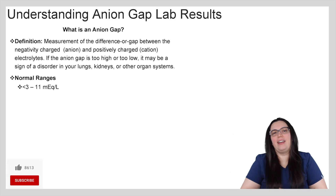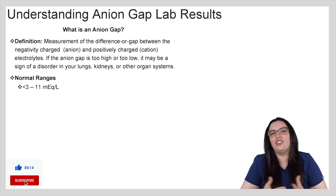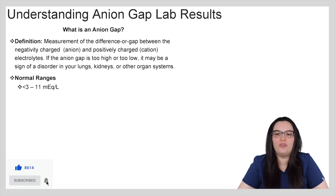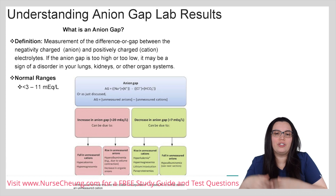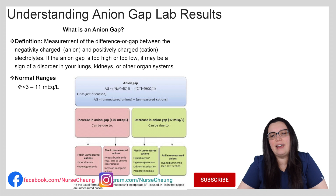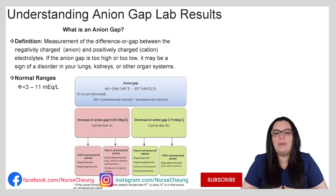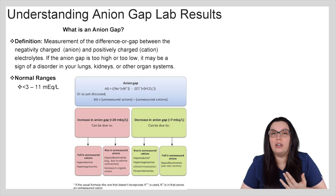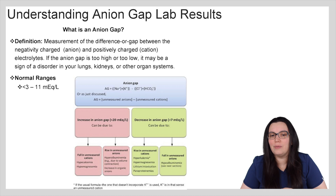So let's talk about anion gap and why it's important. The definition of an anion gap is the measurement of the difference or gap between the negatively charged anions and positively charged cation electrolytes. If the anion gap is too high or too low, it may be a sign of a disorder in your lungs, kidneys, or other organ systems.